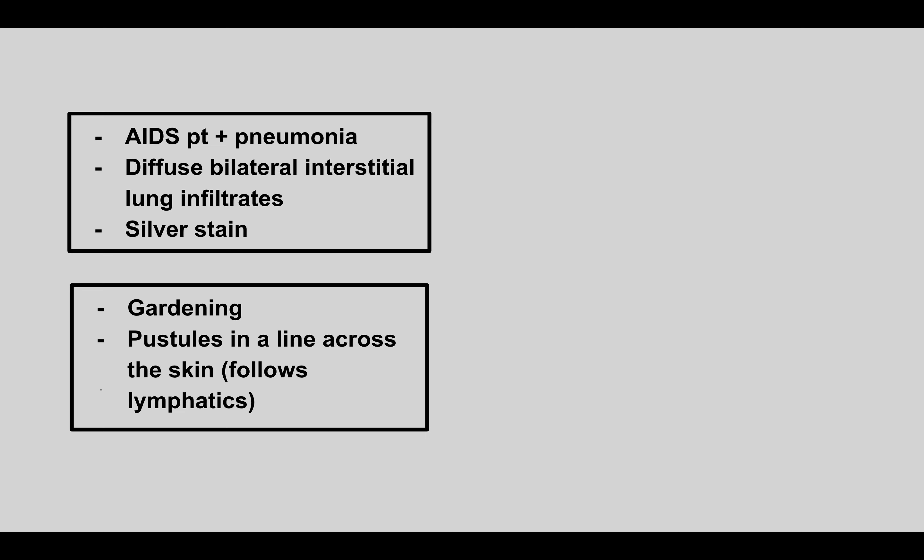The next patient has AIDS and then gets pneumonia. We see diffuse bilateral interstitial lung infiltrates and we use silver stain. So this is going to be Pneumocystis jirovecii, and this causes Pneumocystis pneumonia, also known as PCP. This is an AIDS patient that gets a pneumonia that is bilateral, and the stain here is really important.